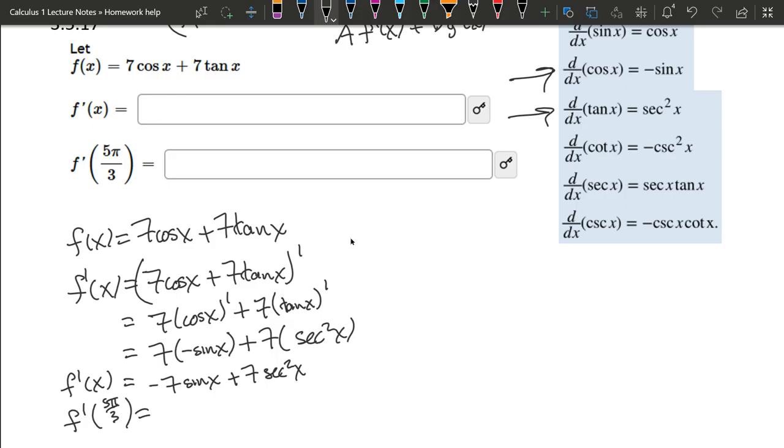Now secant squared—that means secant of that 5 pi over 3, whole thing squared.